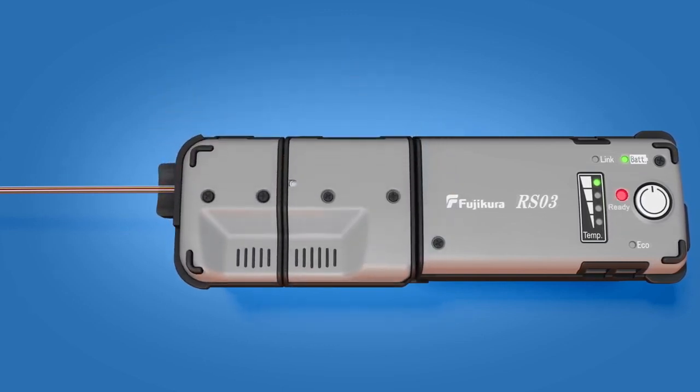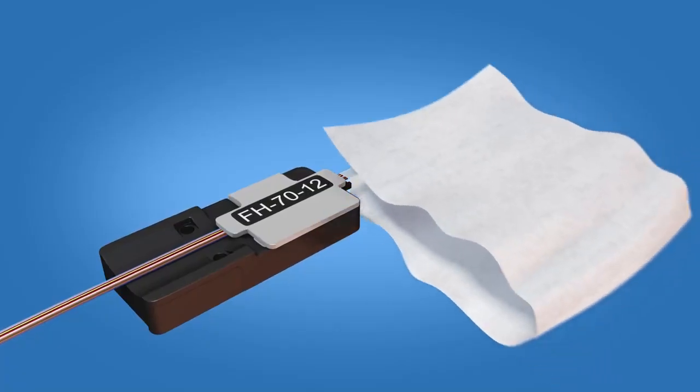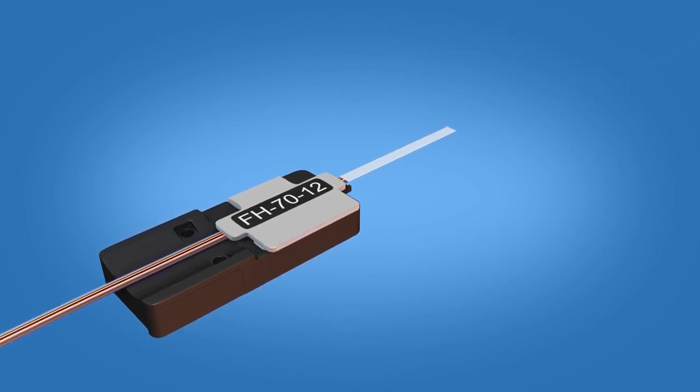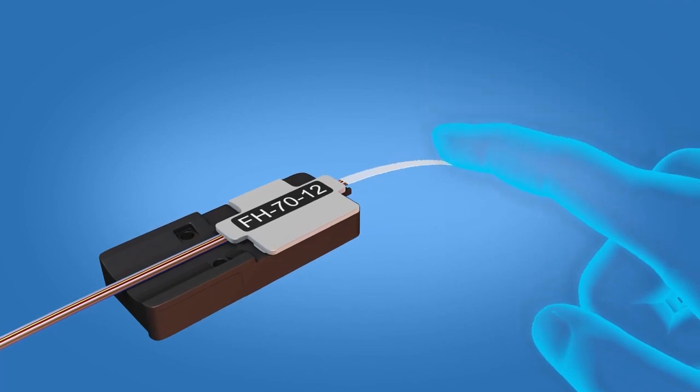Place the prepared fiber holder into the hot jacket stripper with no gap between the two. Close the lid and when the light turns green, strip the fiber. Clean the stripped fiber with a lint-free wipe and fiber preparation fluid. Make sure the fibers are dry and separated. Flick the fibers to ensure their integrity.